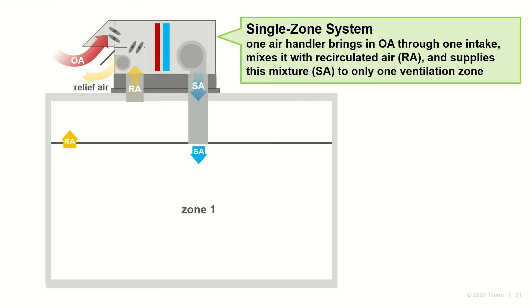In a single zone system, one air handler serves the ventilation needs of one zone. All the outdoor air that enters through the intake is delivered to that single zone, and any recirculated air is merely return air from that same zone. Examples include package rooftop units, classroom unit ventilators, and small single zone air handling units.